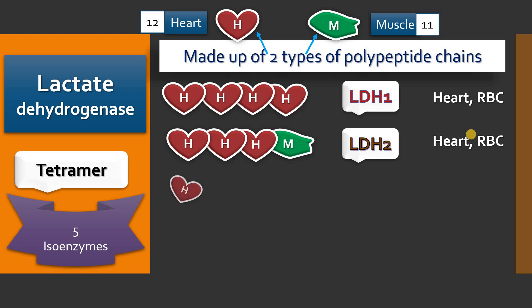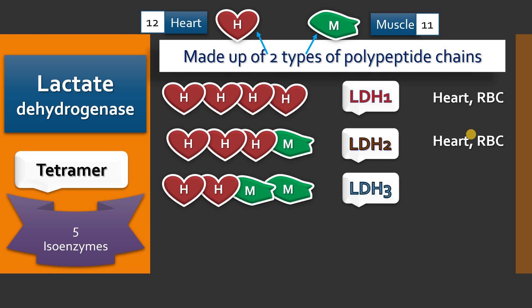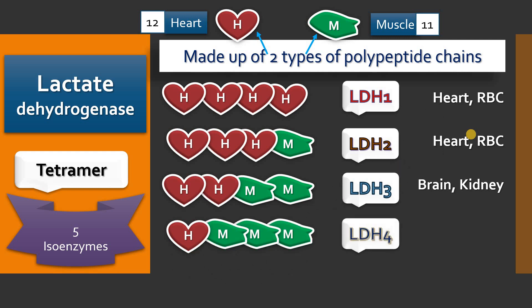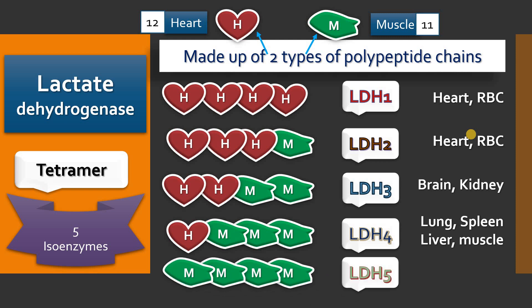If two H subunits and two M subunits combine, they form LDH3, which is predominantly present in the brain, kidney, spleen, and other tissues. One H subunit and three M subunits combine to form LDH4, mainly present in the liver, skeletal muscles, lungs, and spleen. The last isoenzyme, LDH5, comprises all four M-type subunits and is mainly expressed in the liver and skeletal muscle.